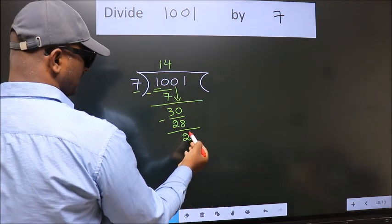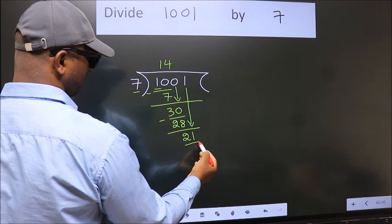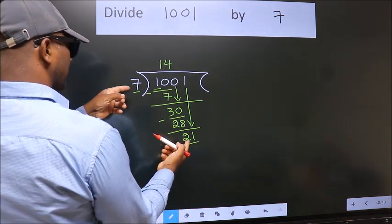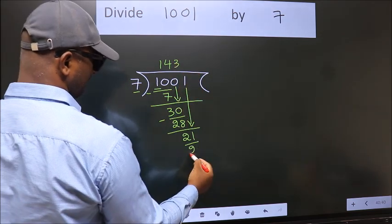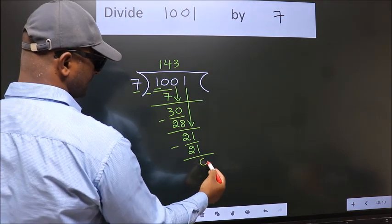After this, bring down the next number. So 1 down, giving us 21. When do we get 21 in the 7 table? 7 threes, 21. Now we subtract. We get 0.